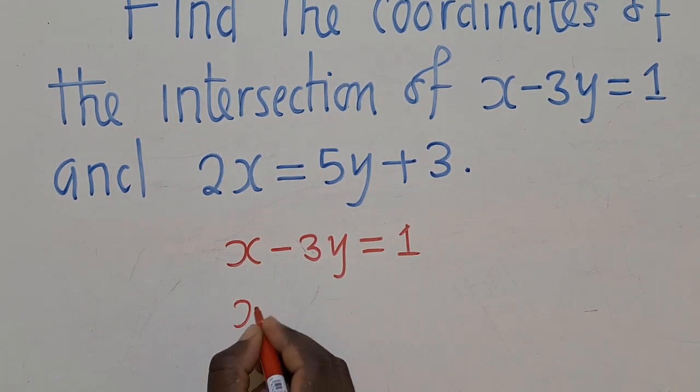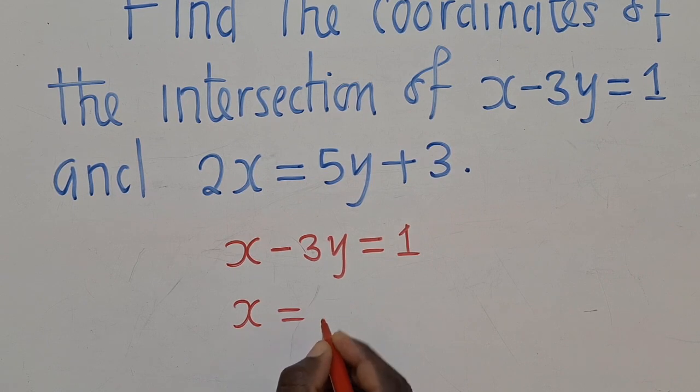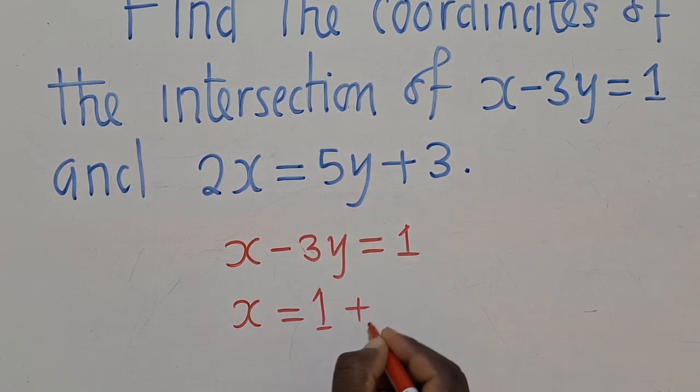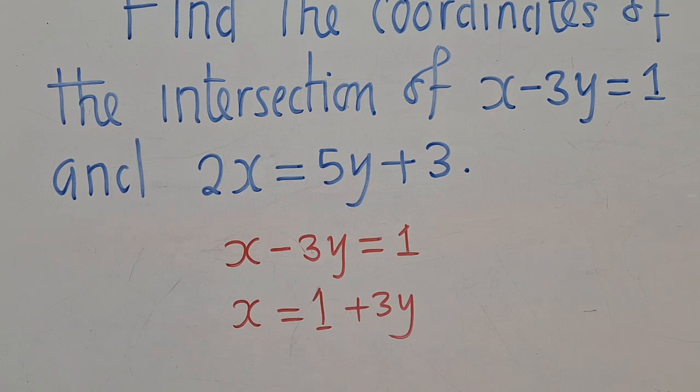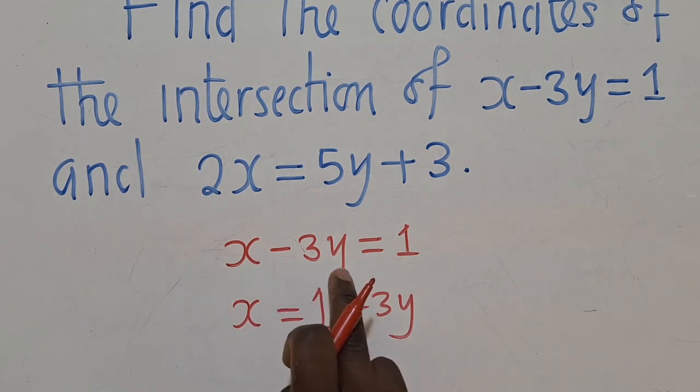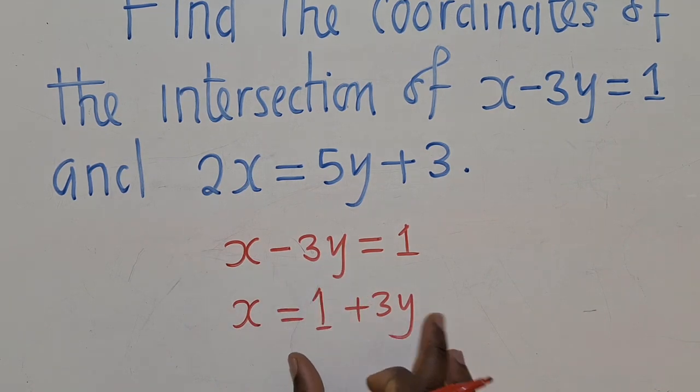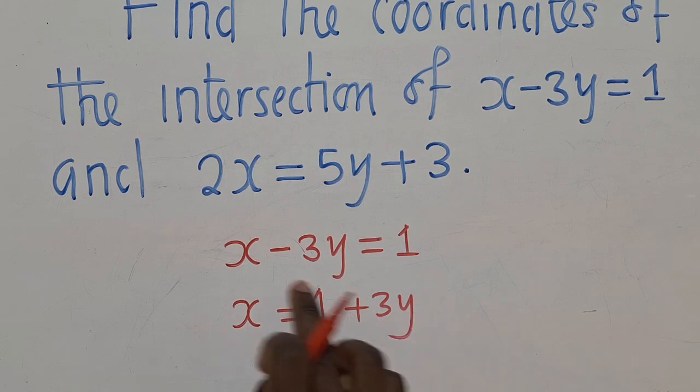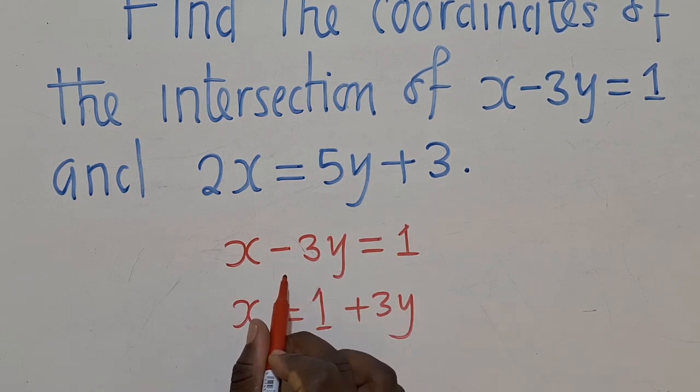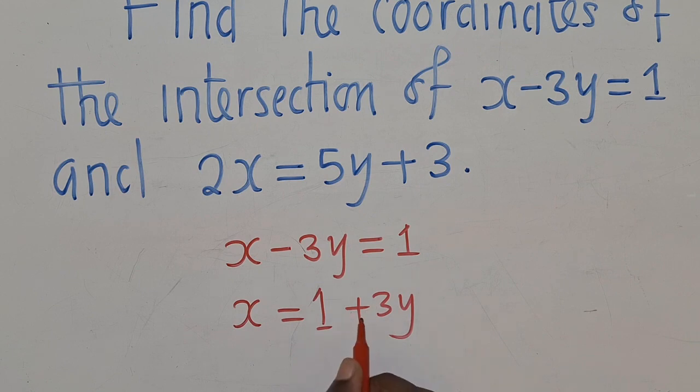So this would be x is equal to 1 plus 3y. So I've made these 3y cross the equal sign. I've added 3y to both sides. So this is it, plus 3y, you can see. Okay, so we have x alone here.